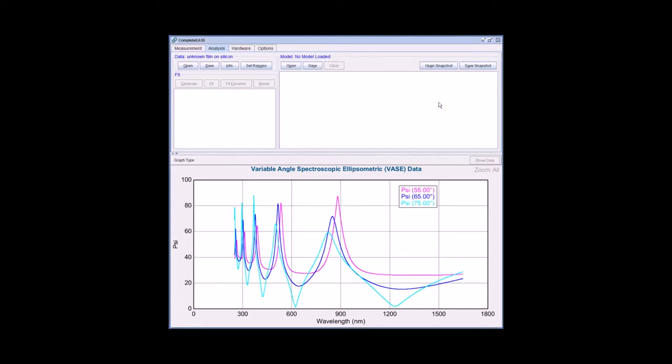I have the data open here, and the very first thing I notice is that there are clear strong oscillations in the data. This is a telltale sign for a transparent material.